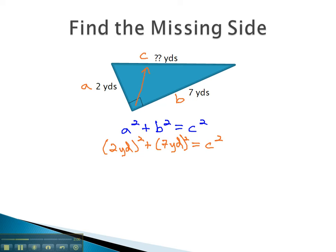So on the left side of this equation, we just have some order of operations we have to walk through to solve it. Doing the exponents first, 2 squared is 4 square yards, 7 squared is 49 square yards, equals c squared. Combined like terms, 4 plus 49 gives us a total of 53 square yards, equals c squared.